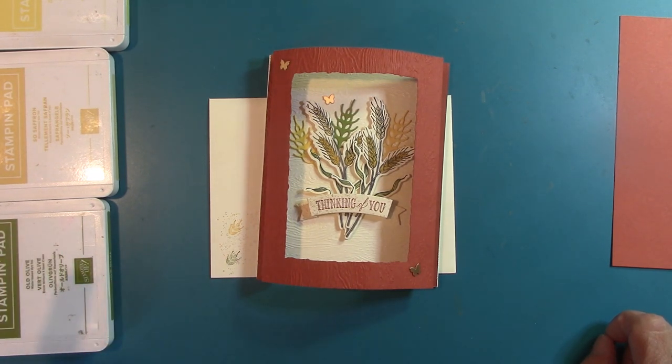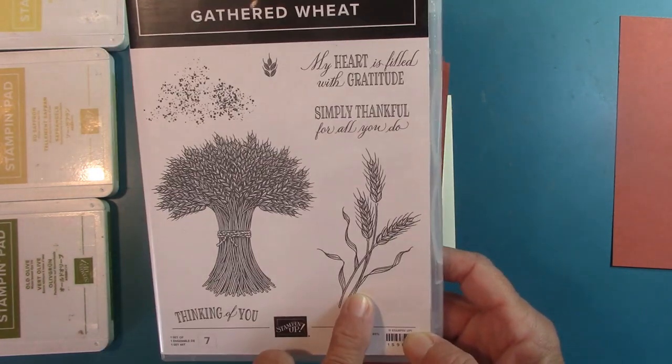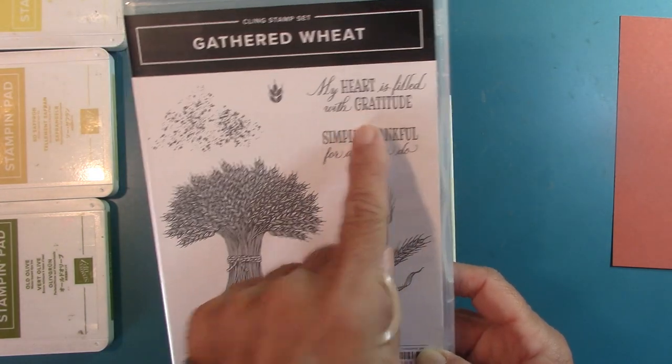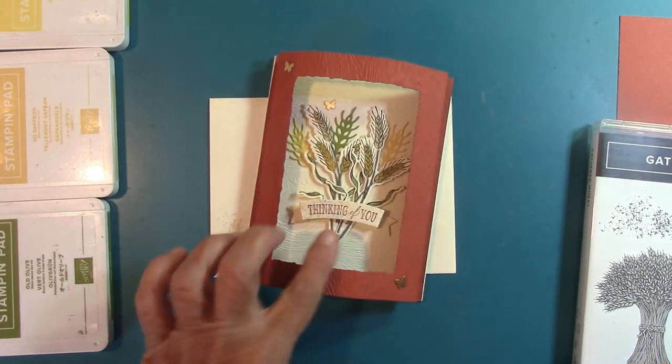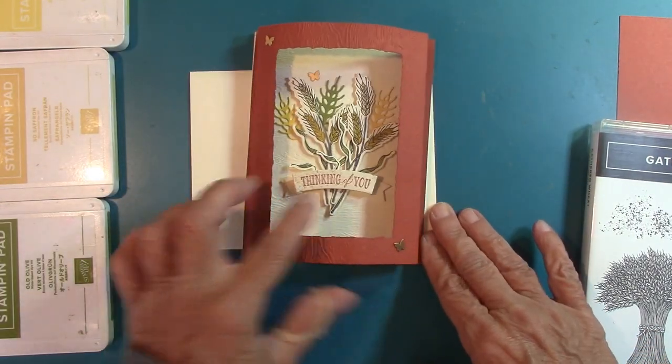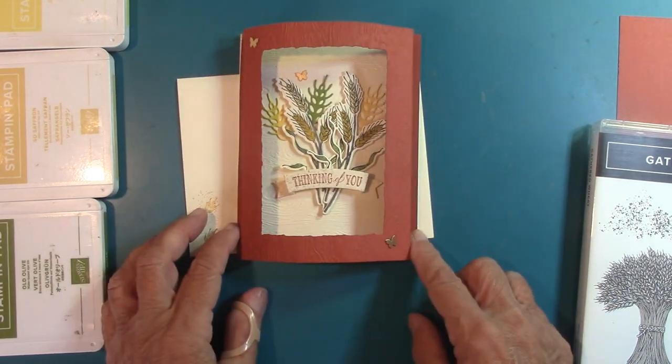And I have not really played with as much as I wanted to. I did a class with this set, but afterwards then I kind of forgot about it, but this is the Wheat Dies, the Wheat Set, Gathered Wheat Bundle, it's called, right here. And we're going to focus on this right here, and my heart is filled with gratitude. Is that what I'm putting in there? Yes. And then our little Thinking of You out there, but we're just going to make a bouquet of beautiful fall foliage there.